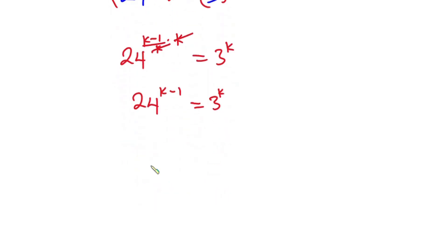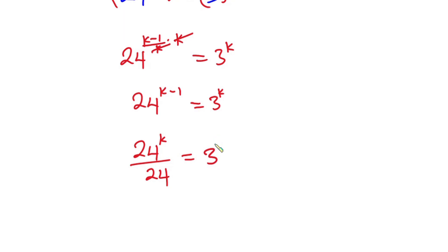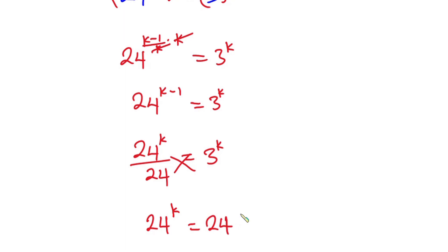Note that 24 to the power (k minus 1) is also the same as 24^k over 24, and this is equal to 3^k. Now let's cross multiply, so we have 24^k is equal to 24 times 3^k.